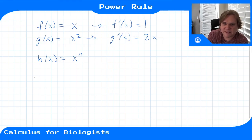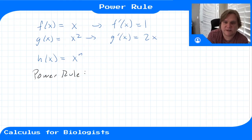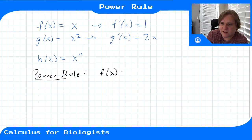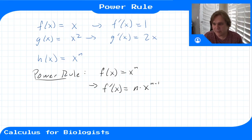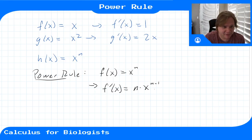What the power rule says is that your function f of x equals x to the n has derivative n times x to the n minus 1. You bring this power down as a constant multiplier, and then we subtract 1 from the power of your x.